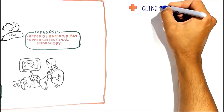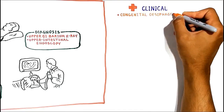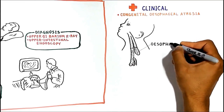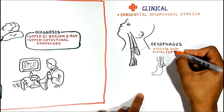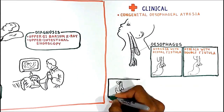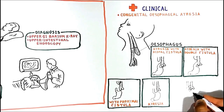Tracheoesophageal fistula often occurs with another birth defect known as esophageal atresia, in which part of the baby's esophagus is missing. Instead of forming a tube between the mouth and the stomach, the esophagus grows into separate segments that do not connect. Esophageal atresia is lethal unless treated, as a baby cannot swallow or feed normally. There are different types: atresia with distal fistula, atresia with double fistula, atresia with proximal fistula, atresia without fistula, and isolated fistula.